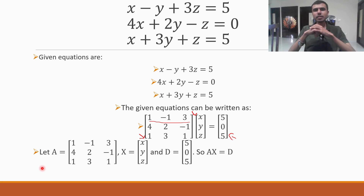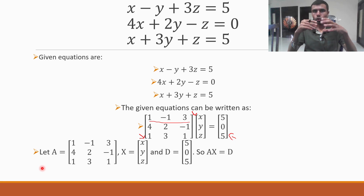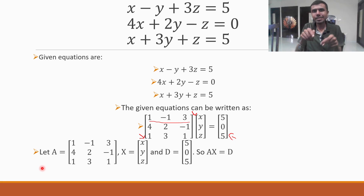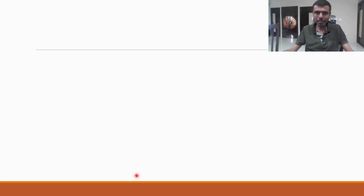Before we use matrix inversion method, we have to check whether we can actually use it or not. To know whether we can apply matrix inversion method, we have to find det(A). If det(A) is not equal to zero, then we can solve the given system of equations by matrix inversion method. If det(A) is equal to zero, then we cannot do so.